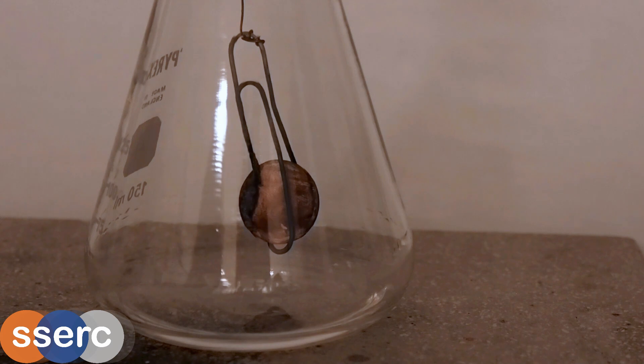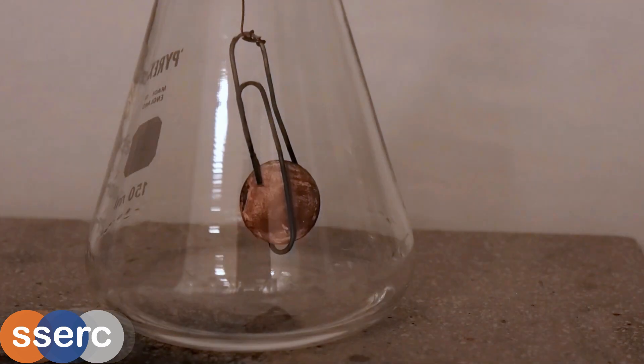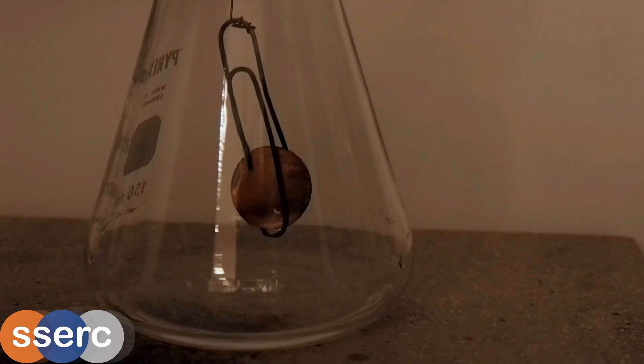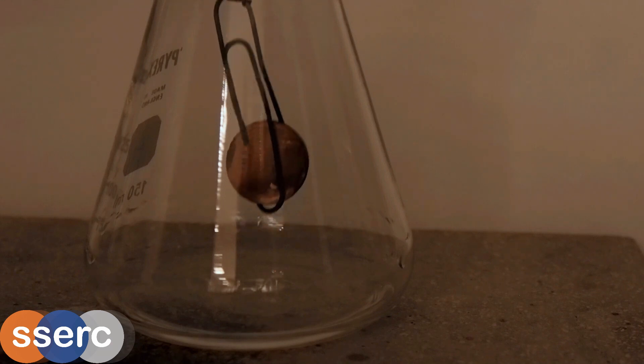After a while you notice bright patches flickering over the surface of the copper. More noticeable if the lights are turned down. If you carefully smell the vapors at the top of the flask you will notice a definite scent of ethanol.